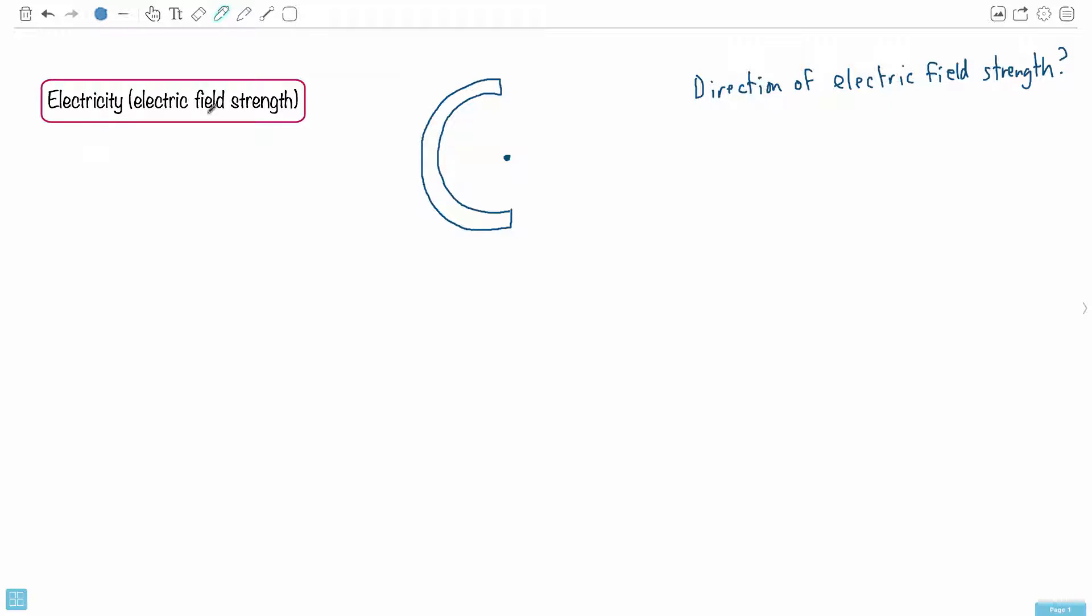This question is about electricity, and more specifically, it's about electric field strength. So here we're told that we have a positive charge that's uniformly distributed around this semi-circle here, and they say it's made of plastic.